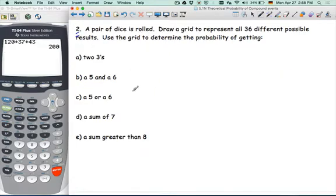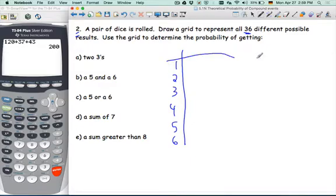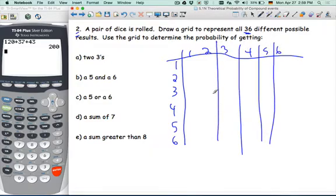Number two here, we're going to take a pair of dice, these dice have sides, regular dice, so one to six. Draw a grid to represent all 36 possibilities and use the grid to determine the probability. Before I go diving into trying to answer these one at a time, I think it's nice to just see what we're dealing with. So let's take this dice. One to six. One, two, three, four, five, six.